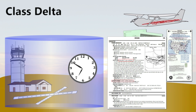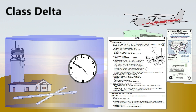When the tower is closed, the Class Delta will revert to either Class Golf or Class Echo, and that information can also be found in the airport facility directory. When the airspace becomes either Class G or E, then the corresponding equipment, operating, and weather requirements for the new airspace take effect.